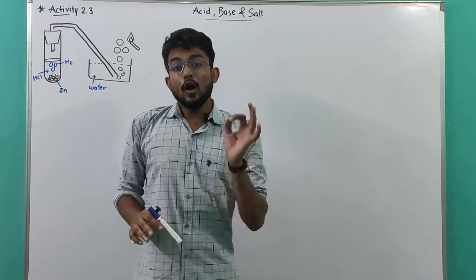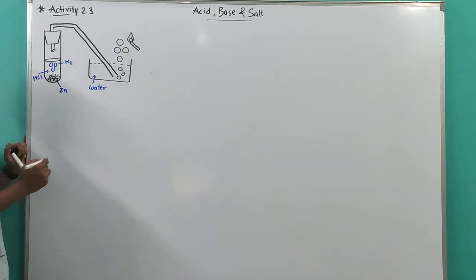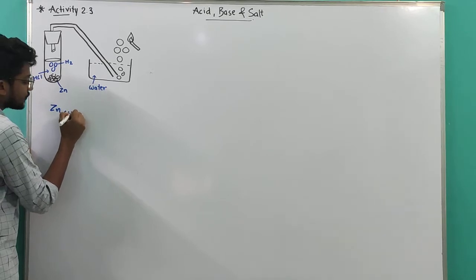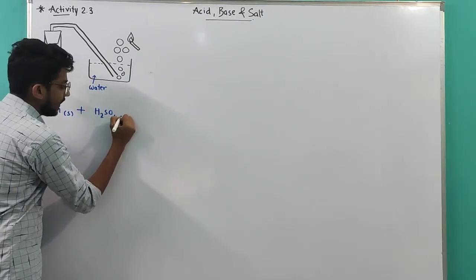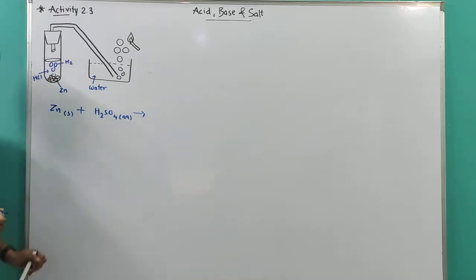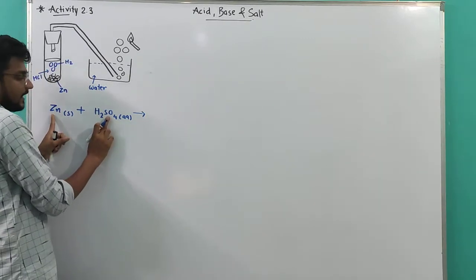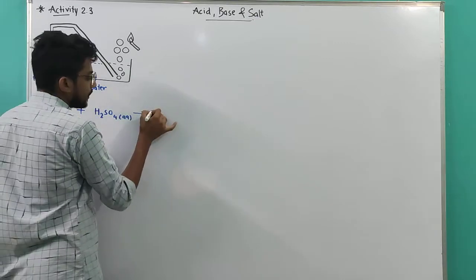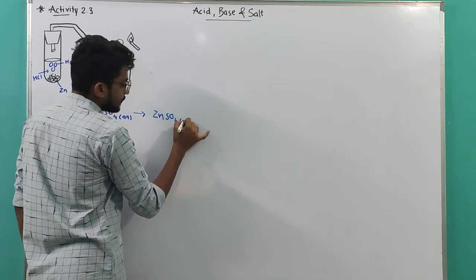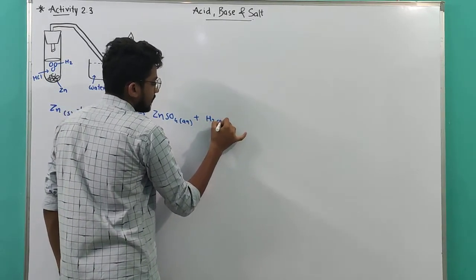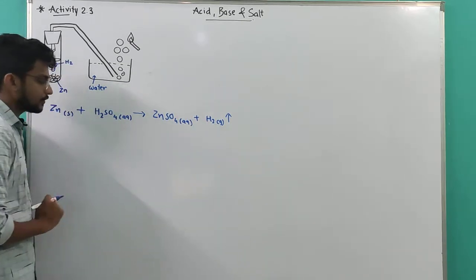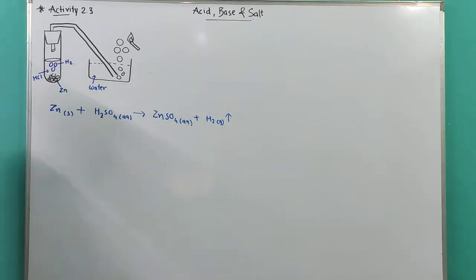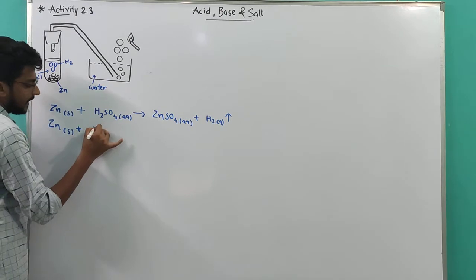Will the observations in all cases be the same or different? Yes, observations will be the same. Now let's write the reactions. We added zinc metal (solid). First with H2SO4 (dilute aqueous acid): in a single displacement reaction, zinc replaces hydrogen. So Zn(s) + H2SO4(aq) → ZnSO4(aq) + H2(g). Balancing: one zinc, one zinc; two hydrogen, two hydrogen; one sulfur, one sulfur; four oxygen — already balanced.